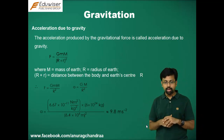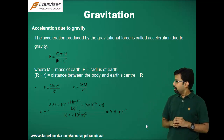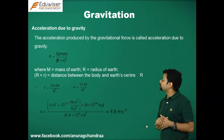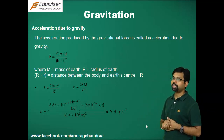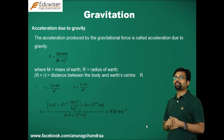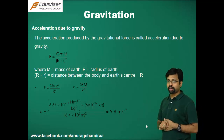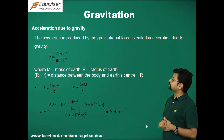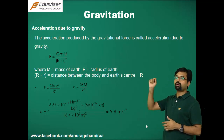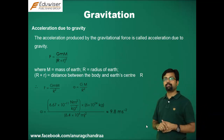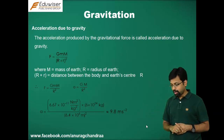For a body falling on the surface of the earth, the gravitational force formula is F = GmM / (R + r)², where G is the gravitational constant, m is the mass of the body, M is the mass of the earth, R is the radius of the earth, and r is the height of the body above the surface of the earth.